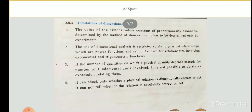Now let us see the limitations of dimensional analysis. First, the value of dimensionless constants of proportionality cannot be determined by the method of dimensions — it has to be determined by experiments only. As observed in the pendulum example, the value of K could not be found through dimensional analysis; it was obtained only through experiments.